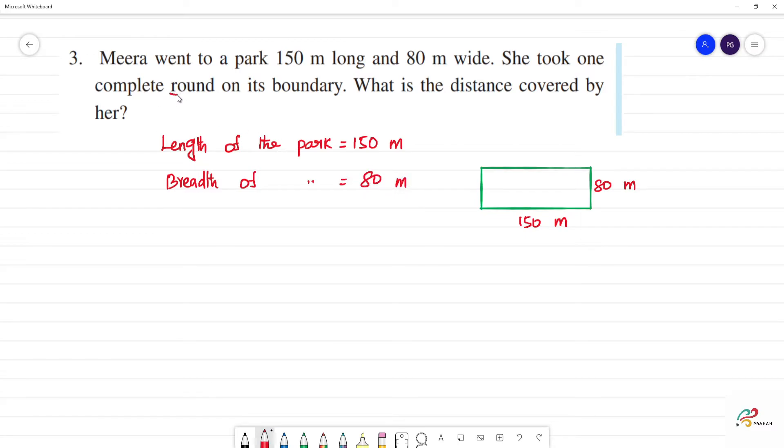Now she took a complete round on its boundary. When she goes around the boundary, what do we calculate? Perimeter. We calculate the perimeter.